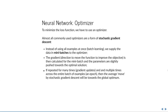We need an optimizer — a function that minimizes the loss function. Almost all commonly used optimizers are a form of stochastic gradient descent. Instead of using all the data at once (batch learning), in neural networks we usually use mini-batches — a subset of your data — and keep giving different subsets, then start over. The gradient — the direction to move the function to minimize the loss — is calculated for each mini-batch, and parameters are slightly pushed toward the optimal solution for that mini-batch. If you repeat this many times across one full pass through the sample, called an epoch, the average move by stochastic gradient descent will be toward the global optimum.